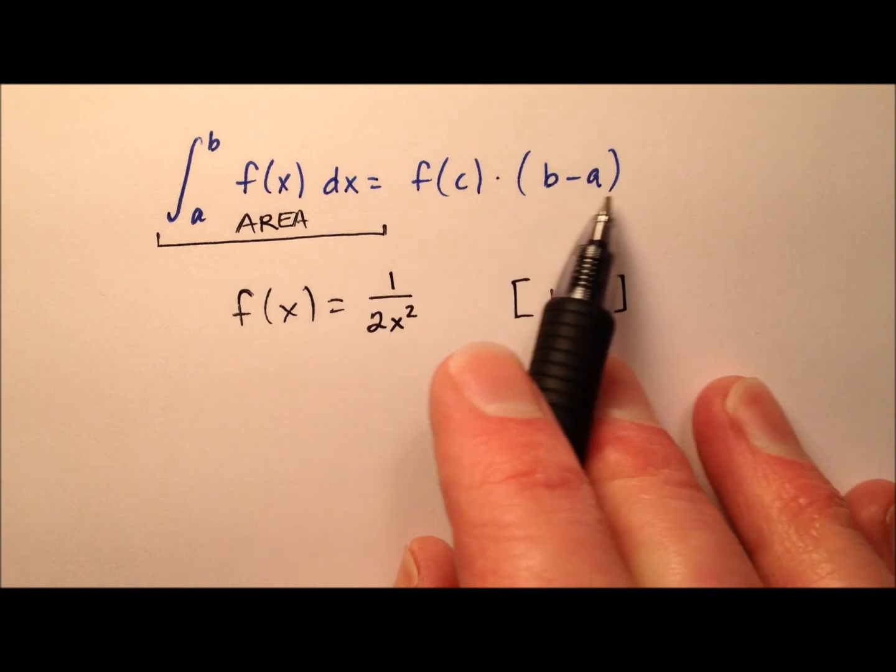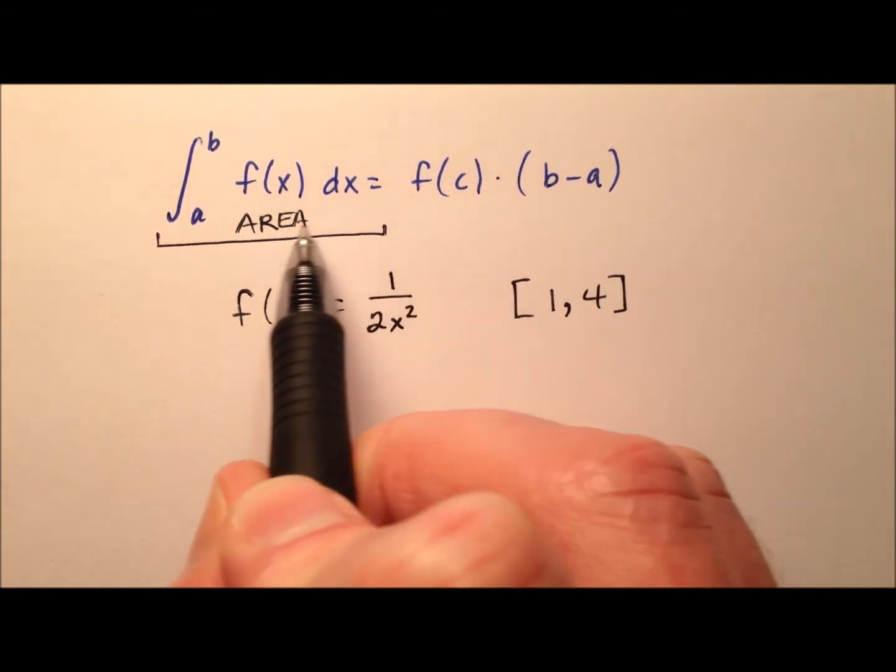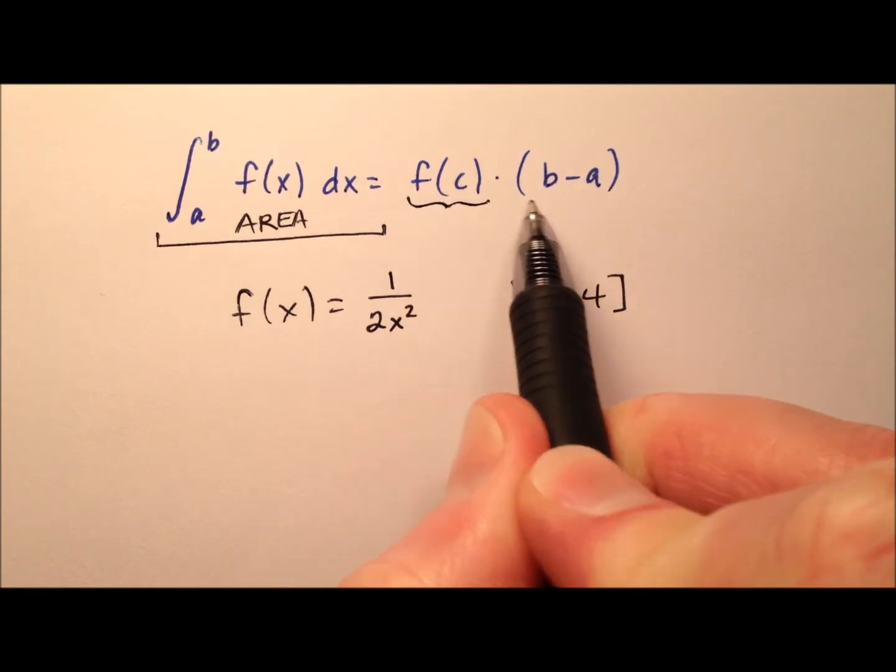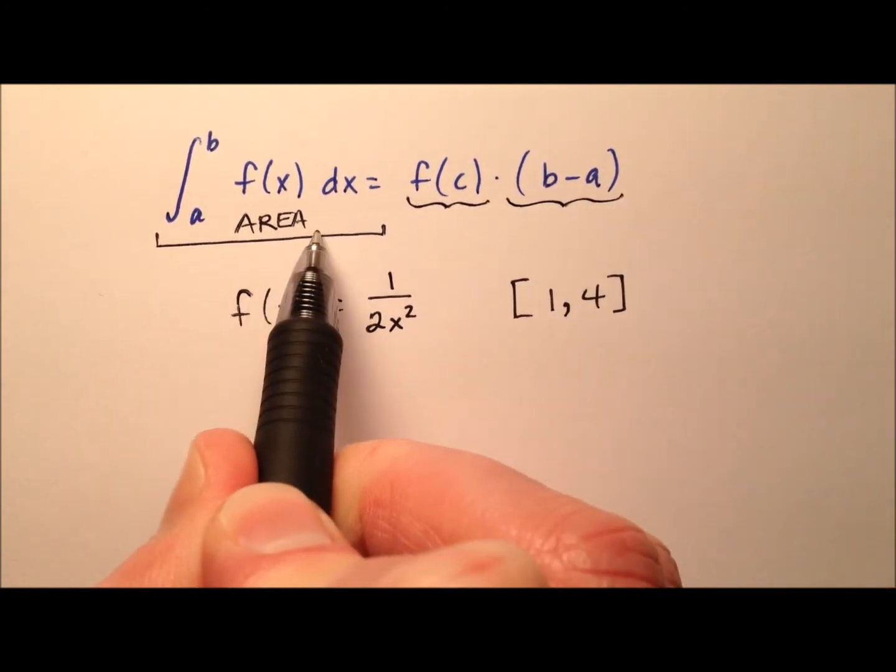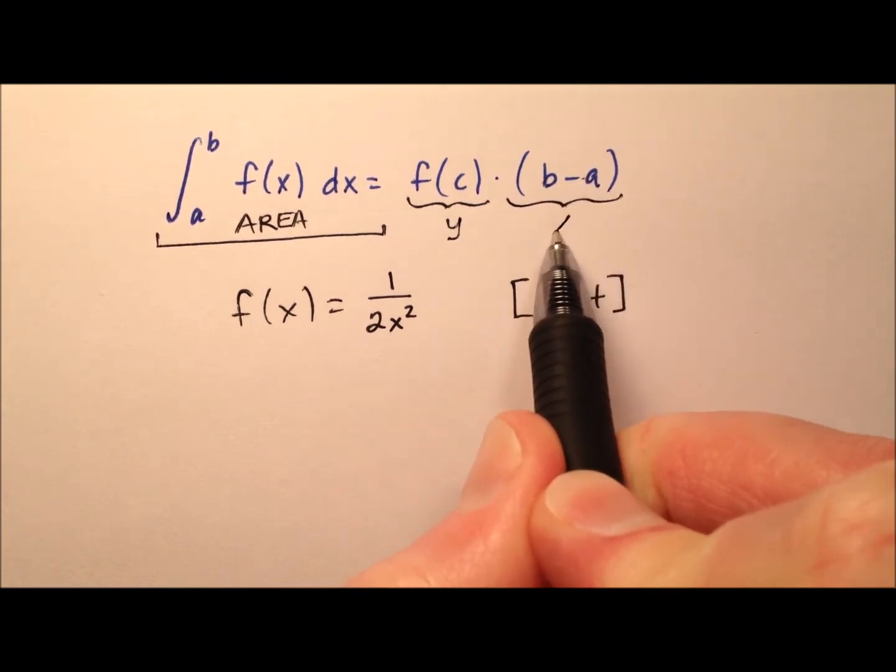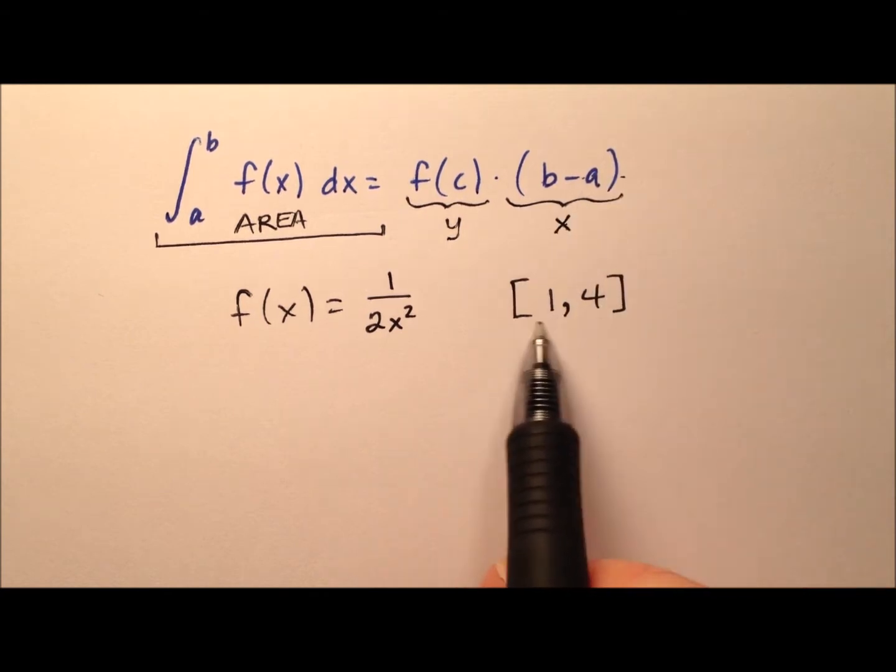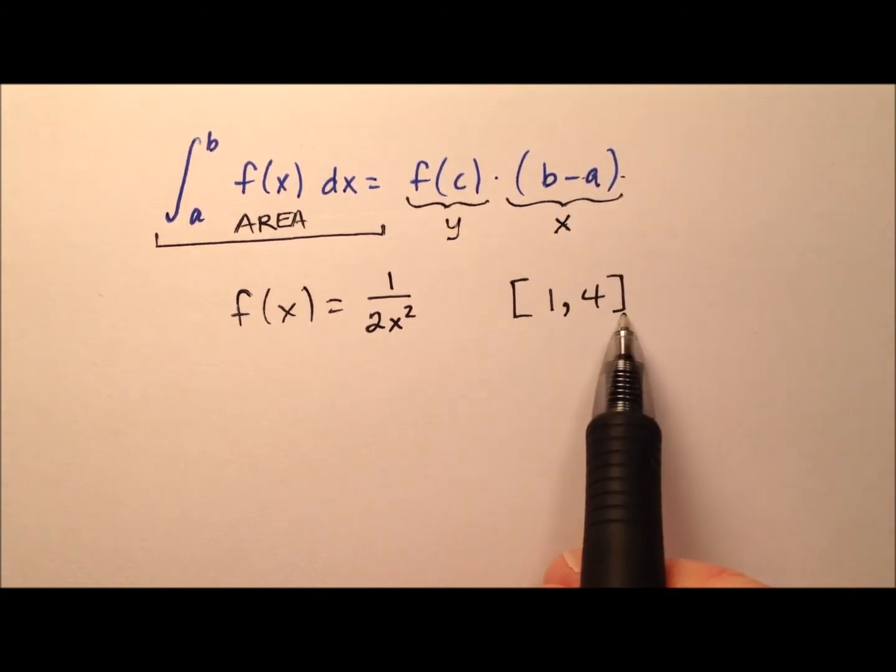What the right side of this mean value theorem for integrals says is that we're going to be multiplying two things here in order to get the same value as this area. And this f of c is actually a y value, and this b minus a is an x value. And this x b minus a is the width of this closed interval.